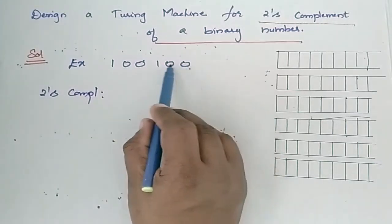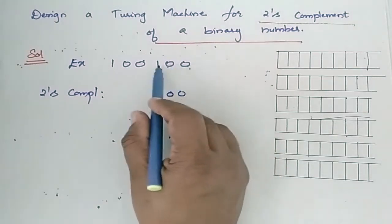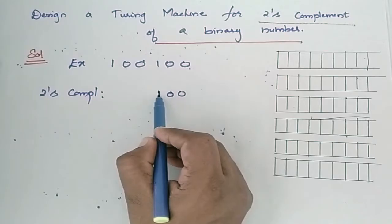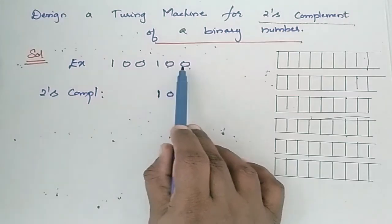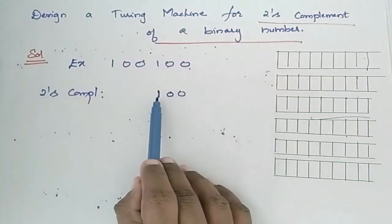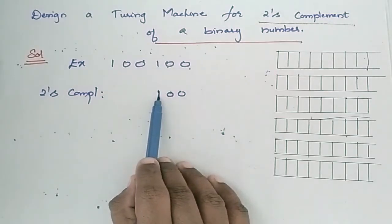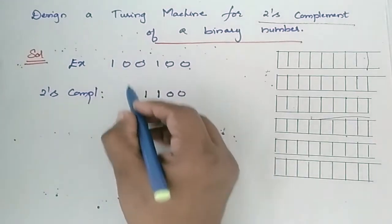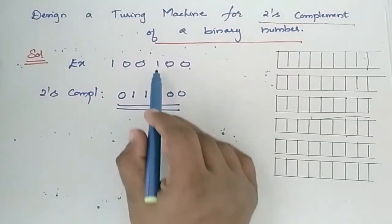First, check out the 0's. Don't disturb the 0's at the least significant bits. When you come across a 1, the first 1 is placed as such. So, moving from least significant bit, the 0's are placed as such and the first 1 bit encountered is placed as 1 itself. The remaining bits are all 1's complemented. So, 0 1 0 1 1 0 — this is the 2's complement of 1 0 0 1 0 0.